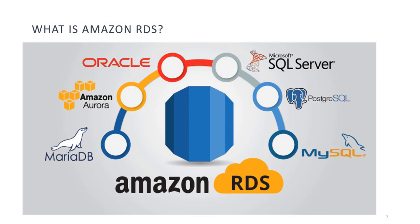What is Amazon RDS? Amazon RDS is a relational database service — a managed database service that makes it easy to set up, operate and scale a relational database in the cloud. You can use RDS to run a variety of popular database engines such as MySQL, PostgreSQL, Oracle and SQL Server.